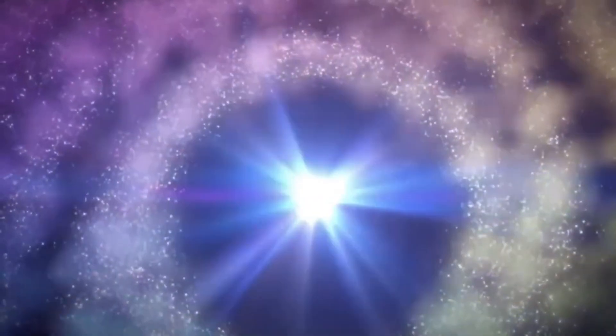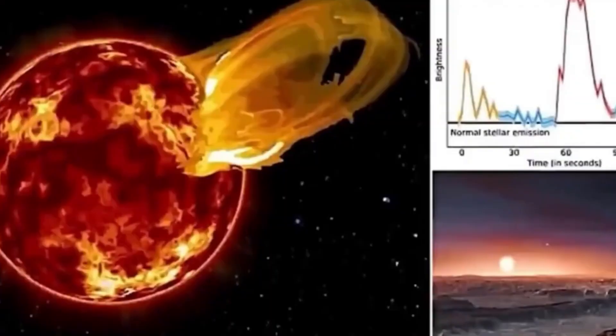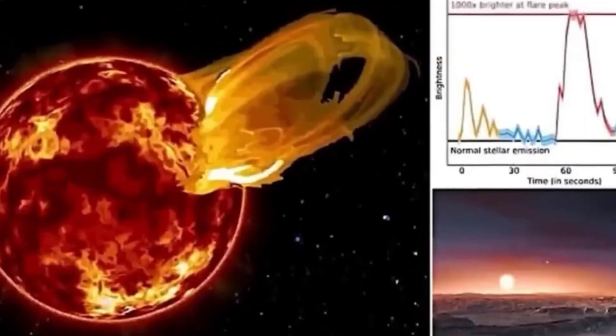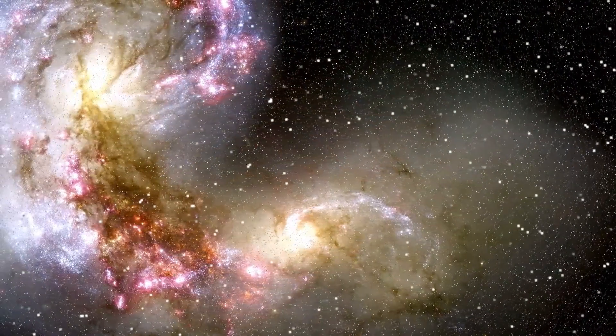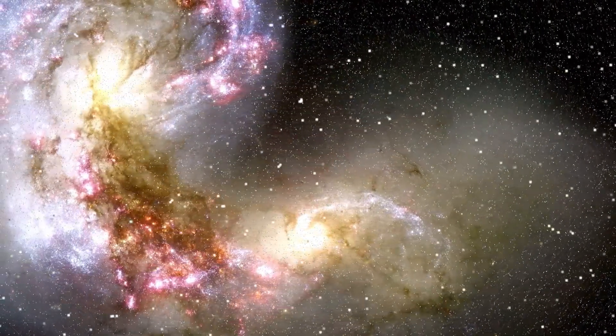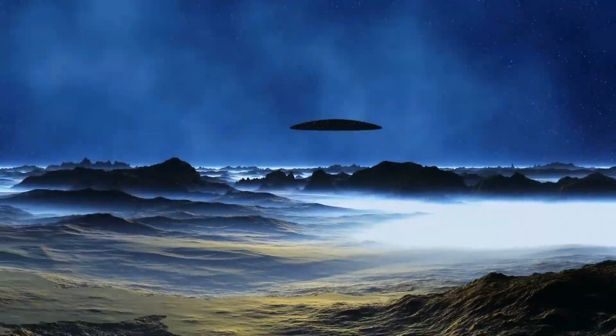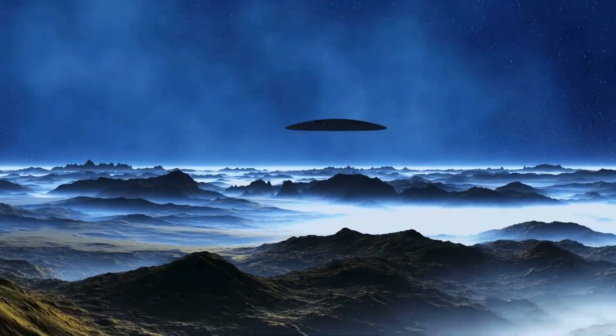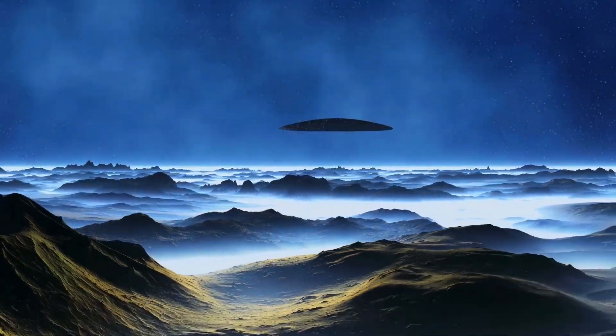Earth-sized planets with atmospheres rich in oxygen, nitrogen, and carbon dioxide are considered good candidates for life. Detecting technological life might involve finding chemicals like chlorofluorocarbons, which would be evident from Earth's atmosphere if observed from afar. The presence of such chemicals would suggest a civilization.